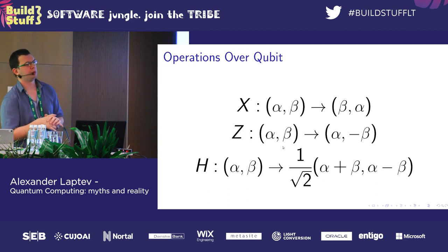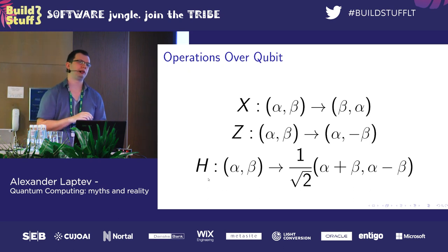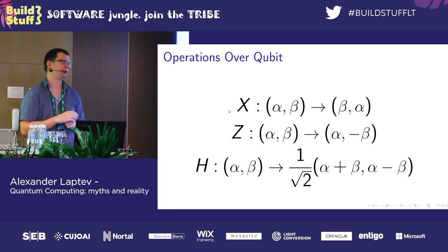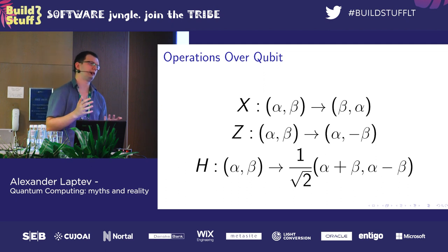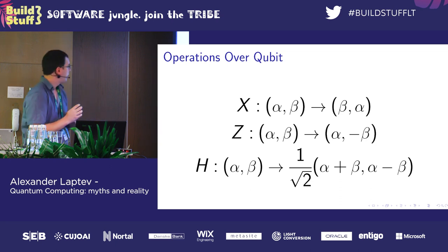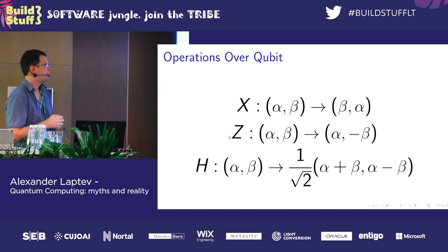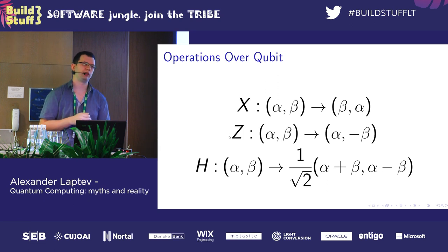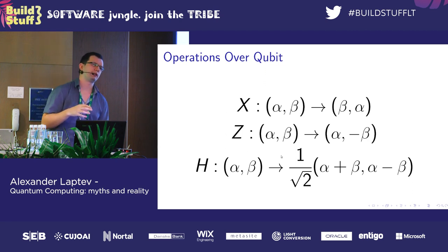The Hadamard gate is the most popular, with a not-so-simple formula. It's usually used to convert the zero state to a balanced 50/50 and the one state to another balanced 50/50. Any operation over a qubit has two important requirements. The first is that every valid superposition must be converted into another valid superposition — we can take any qubit in any state, apply any operation, and at the end we have a qubit that after measurement gives us either 0 or 1.